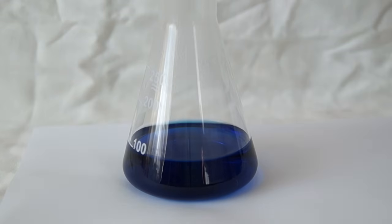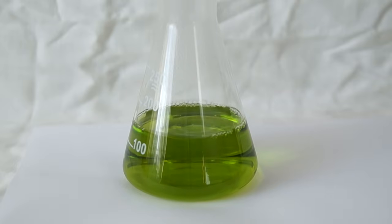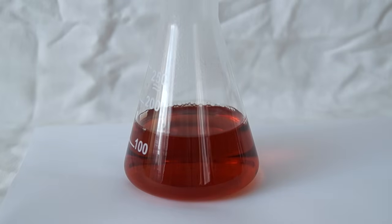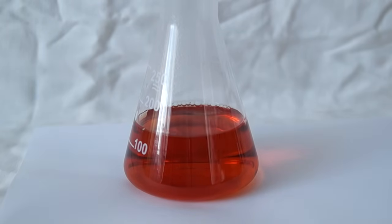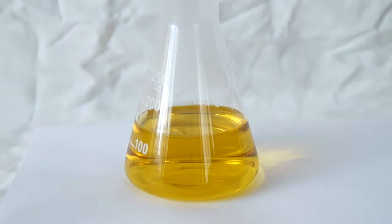Afterwards we pour alkaline solution of glucose into the flask and observe beautiful changes of color. First the solution becomes green and then it turns red and eventually becomes yellow. These colors are reminiscent of traffic light colors red, yellow and green.